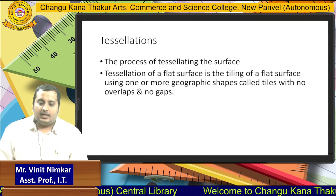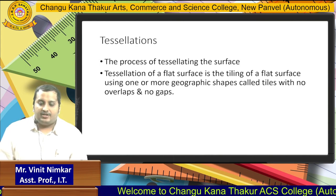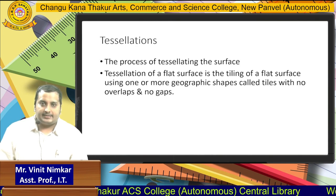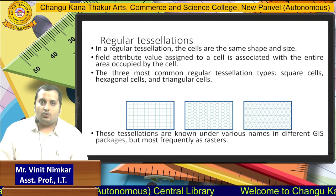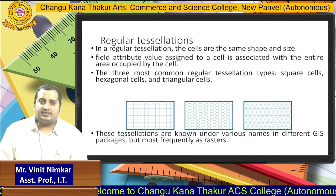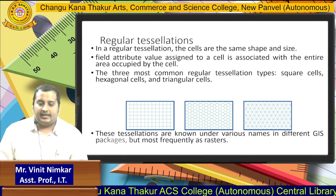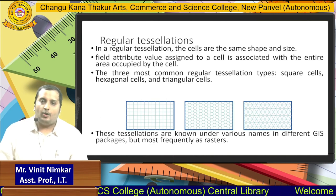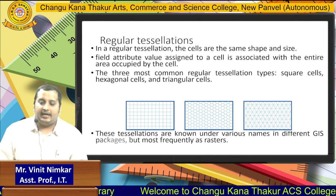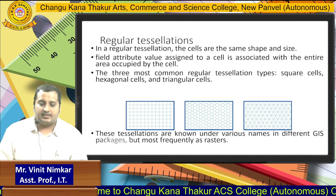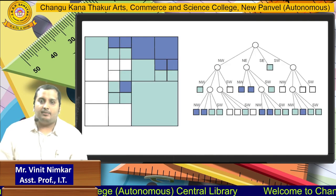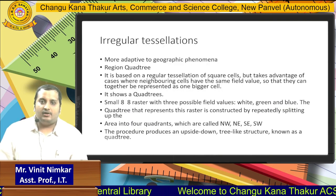Next is tessellations. Tessellation of a flat surface is a tiling of a flat surface using one or more geographic shapes like tiles, where the entire area should not overlap. There are two types of tessellations. In regular tessellation, the entire study area is divided into fixed-size shapes — as you can see in the diagram, it can be squares, honeycomb patterns, or triangles. These cells are of equal size. In irregular tessellations, the entire study area is also divided into cells, but the cell size can be variable, as shown in the diagram. So the two main types are regular and irregular tessellations.